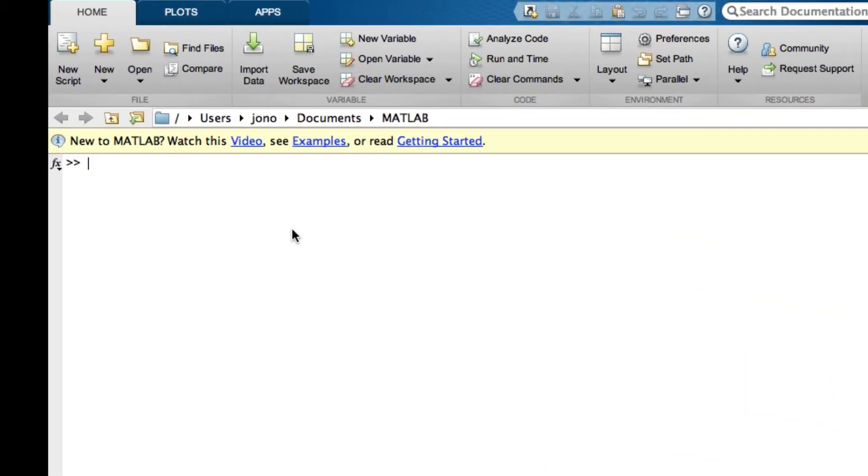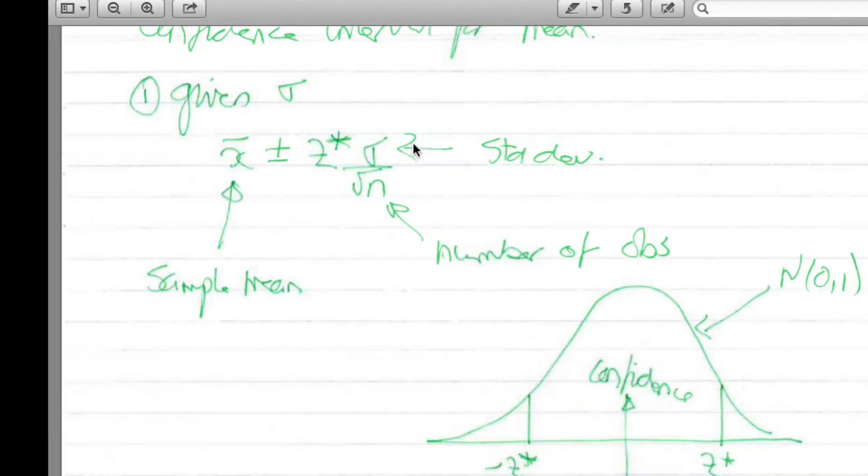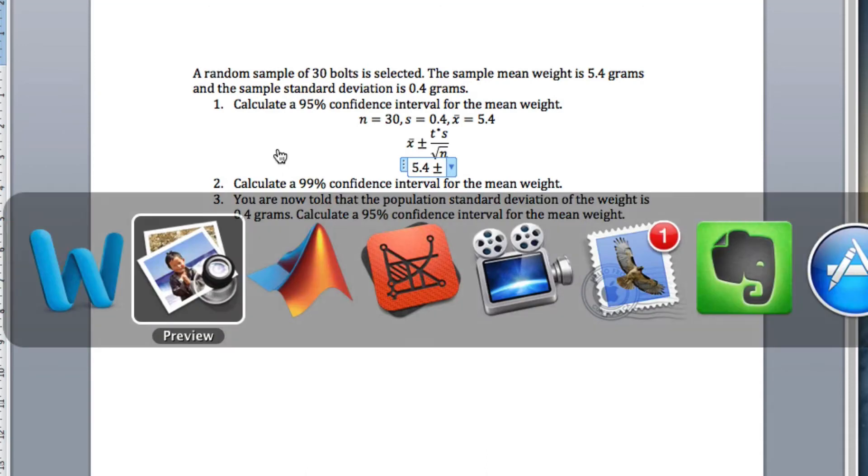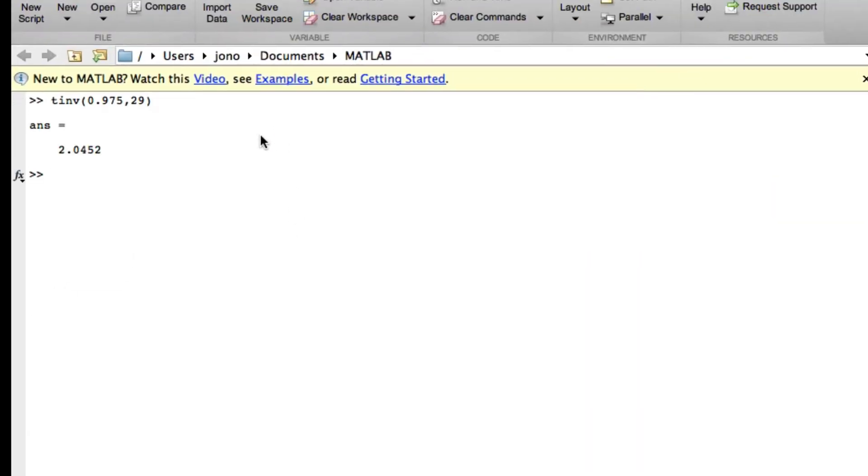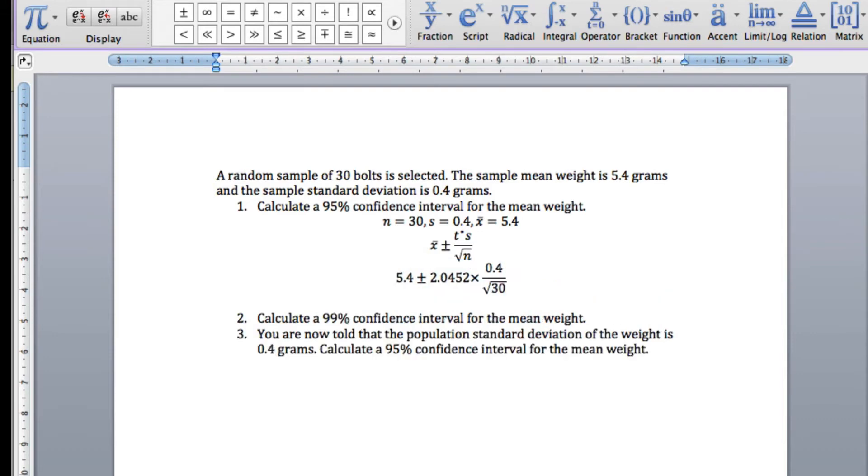So now if we look at this t-star, the area to the left of it is 0.95 plus 0.025. So altogether this area to the left is going to be 0.975. So if we go to MATLAB, we go to t-inverse, we give that 0.975. So now we need the degrees of freedom. So we go back to, we know that the degrees of freedom in this case is going to be n minus 1. So we know that n equals 30, so the degrees of freedom is going to be 29. Rule of thumb, this value for 95% confidence when you've got t should be around about 2. So if you get values that are very different from 2, you should just go and check your calculations again.